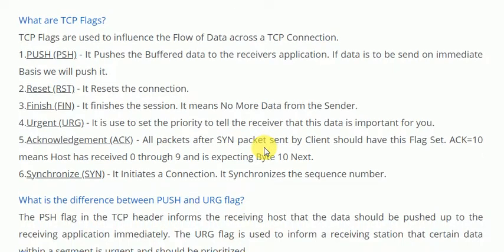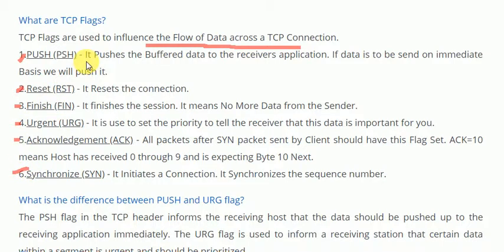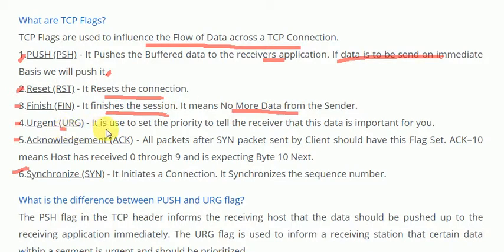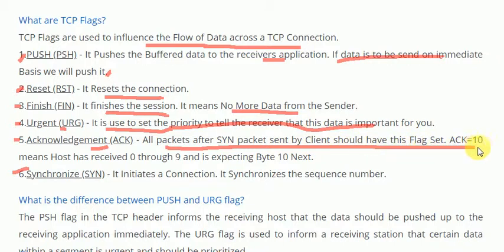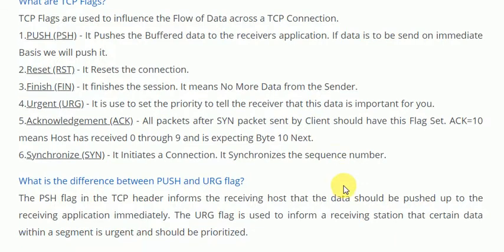What are TCP flags? TCP flags are used to influence the flow of data across a TCP connection. The various flags are: Push (PSH), Reset (RST), Finish (FIN), Urgent (URG), Acknowledgement (ACK), and Synchronize (SYN). PSH pushes buffered data to the receiver application immediately. RST resets the connection. FIN finishes the session — no more data from the sender. URG sets priority so the receiver knows data is important. ACK acknowledges received packets, and SYN initiates and synchronizes the connection sequence numbers.